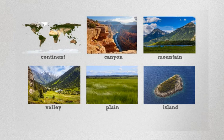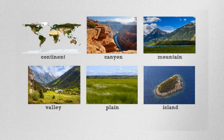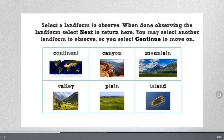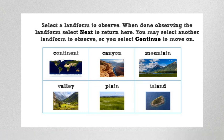If you need to, you may go back and make changes to the question you wrote a few moments ago. Select Continue when ready. Select a landform from the table to view an image and a clay model of the landform. Select Next to return to the table and view another landform or move on.